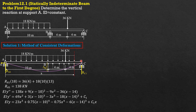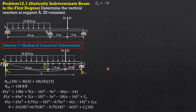Setting x equals 18, y is 0 at C: 0 equals 23 times 18³ plus 0.75 times 8⁴ minus 0.75 times 18⁴ minus 6 times 4³ plus C₁ times 18. Solving for C₁: C₁ equals negative 962/3.